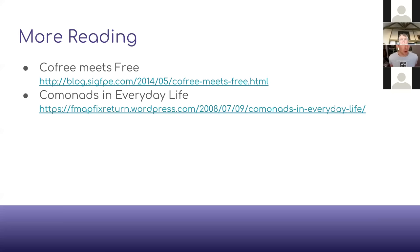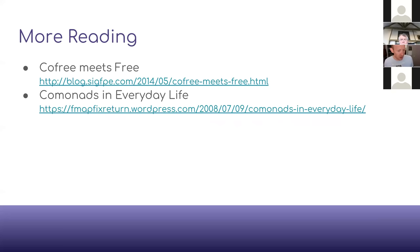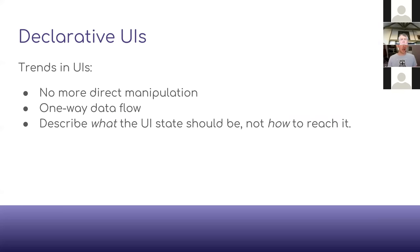Another resource is a blog post called 'Cofree Meets Free' by Dan Caponi, which is about the relationship between comonads and monads, and cofree and free in particular — that's really worth reading, and you'll see where the UI stuff clicked in my mind. There's also a wonderful post by Gershom Goldberg called 'Comonads in Everyday Life', about using comonads to model breadcrumbs or a menu in a website, which has a more obvious UI connection.